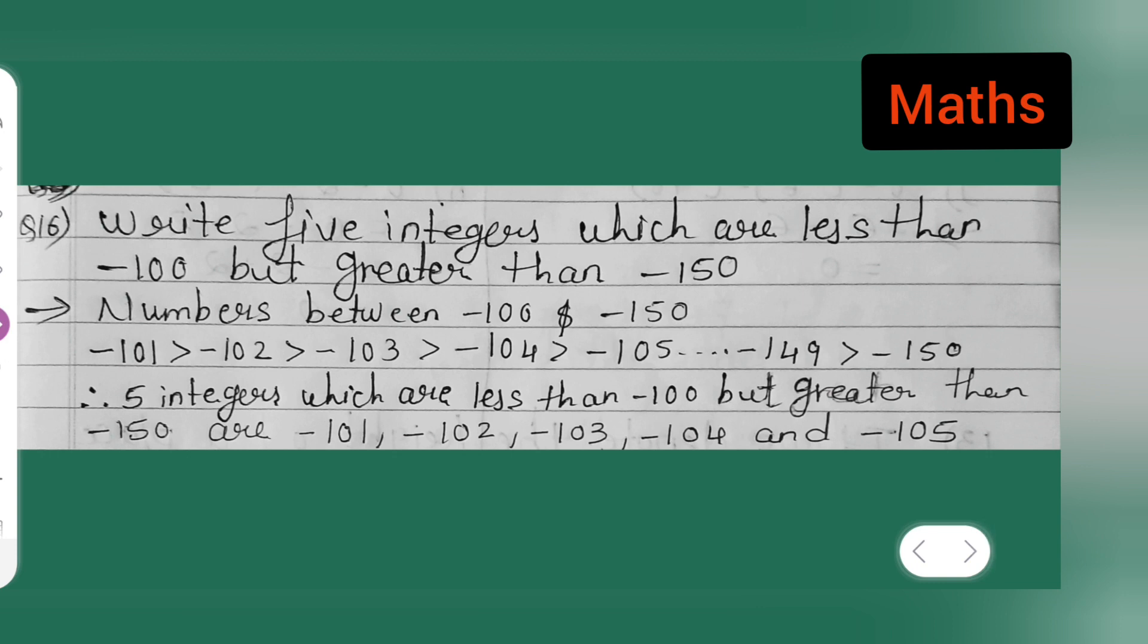So let us see. First, let's write down this: write 5 integers which are less than -100 but greater than -150. The answer is: numbers between -100 and -150 are...